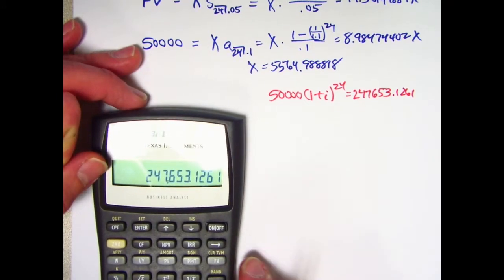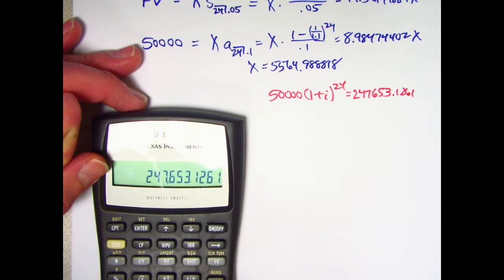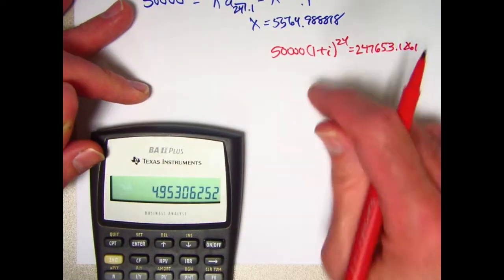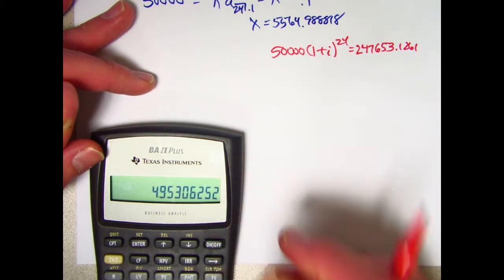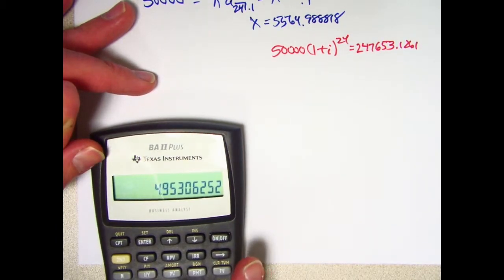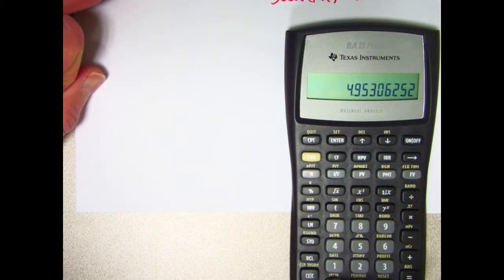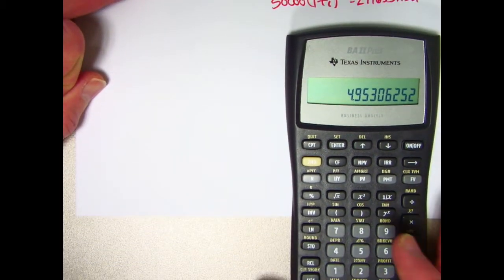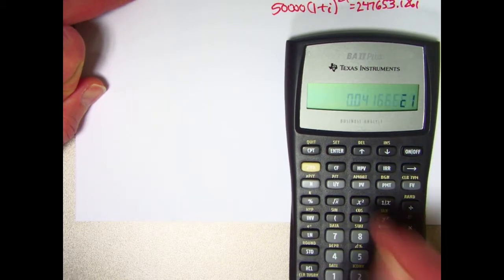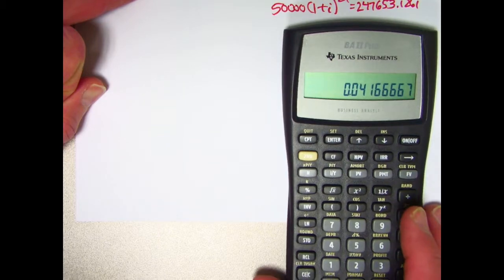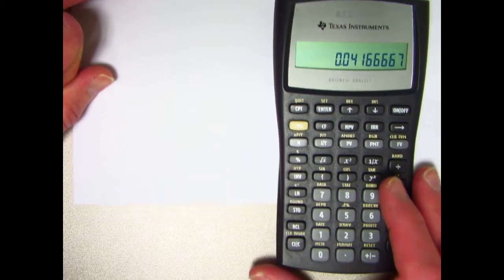So, we have 50,000 times 1 plus I to the 24th equals, what's on the calculator here, 247653.1261. Let's just use the calculator from this point on. I want to divide that by 50,000. Divide by 50,000. 1 plus I to the 24th is about this number. I want to raise that to the 1/24th power. Let me just first store this quantity in register 0. The 1/24th power, what is 1 divided by 24? It's this. Let's store that in register 1.